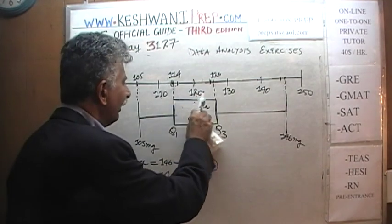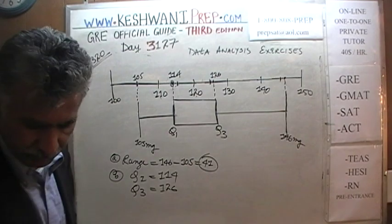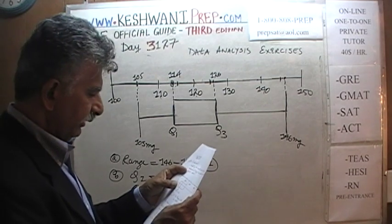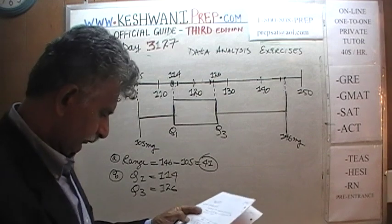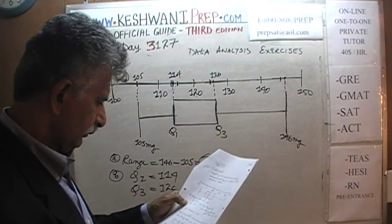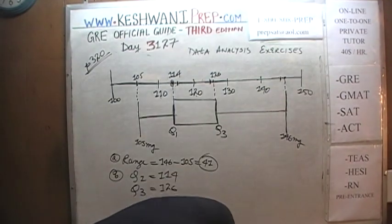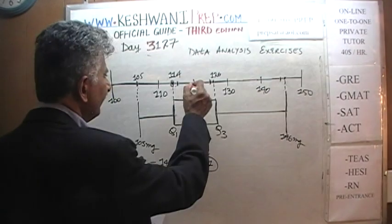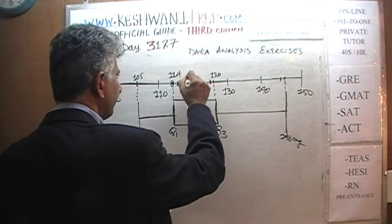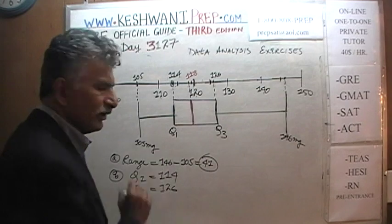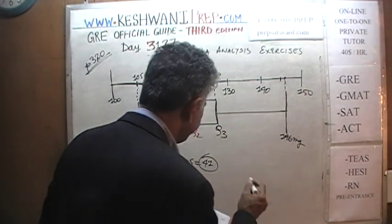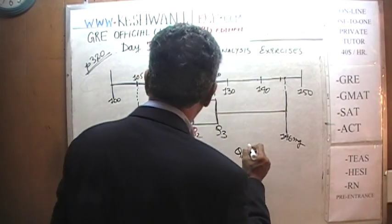Within that box, we're going to find one more important line, shown in a different color. That line appears at 118. That shows us the second quartile. The second quartile is 118.